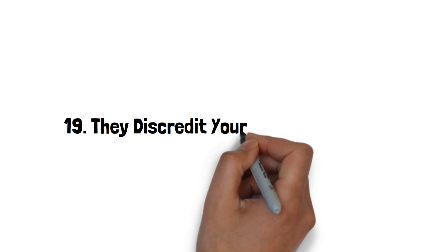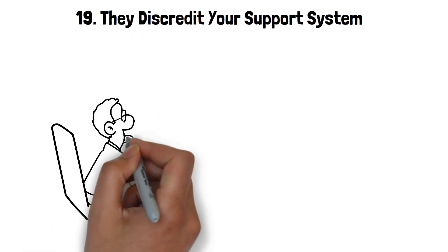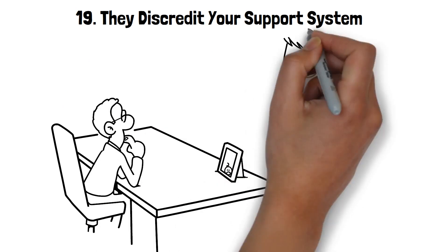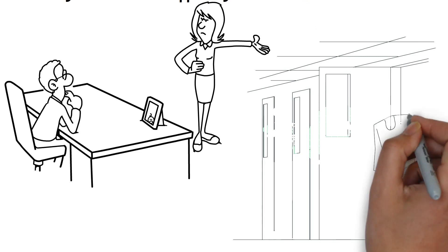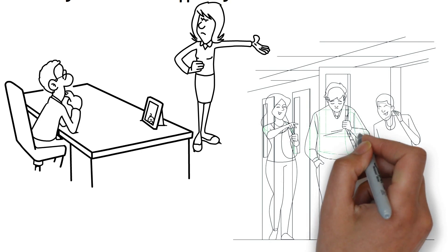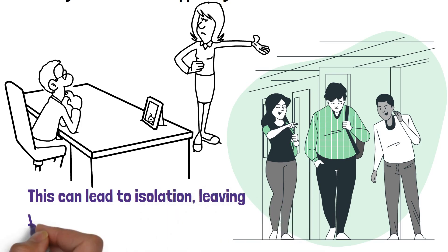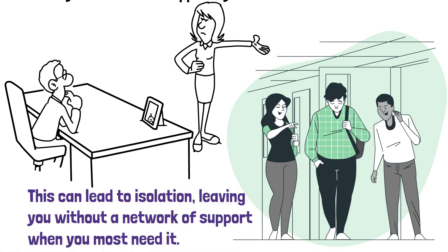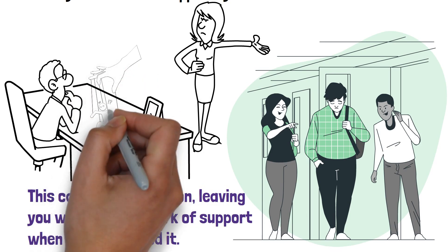19. They discredit your support system. One of the most insidious tactics is when a manipulator tries to distance you from your support system. They might subtly, or overtly, criticize your family and friends, insinuating that these loved ones don't truly care for you, or understand you like they do. Over time, this can lead to isolation, leaving you without a network of support, when you most need it. When your only sounding board is the manipulator, it's easier for them to control your narrative.